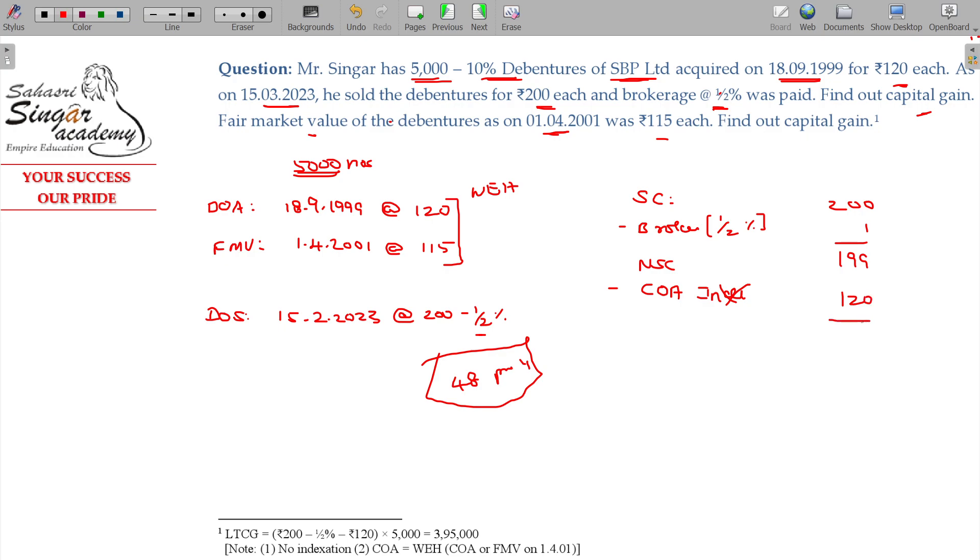So the difference being Rs. 79 is the long-term capital gain per debenture. For 5,000 debentures, the total long-term capital gain is Rs. 395,000.